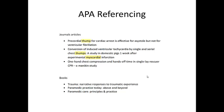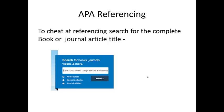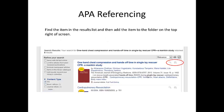If you have the journal article title, you can search for that in the library catalogue. Put in the full title in the search box and hit search. As we've searched for it through VU, we'll get a reference which will come up with one of the first couple of results.